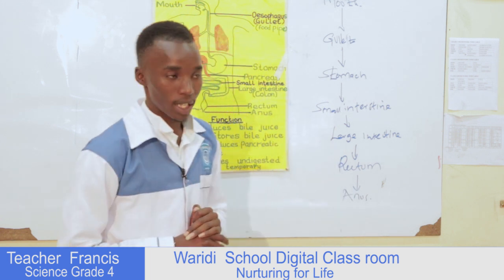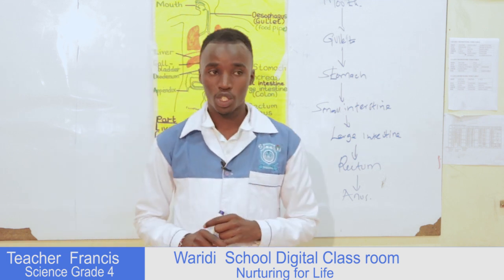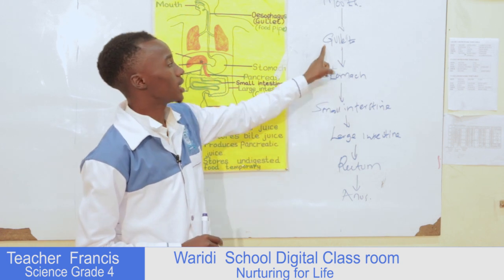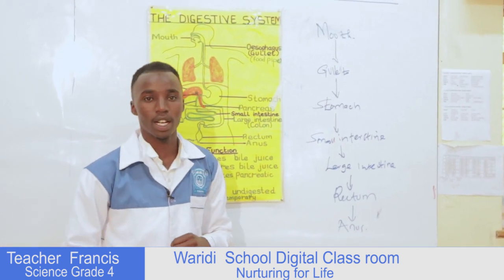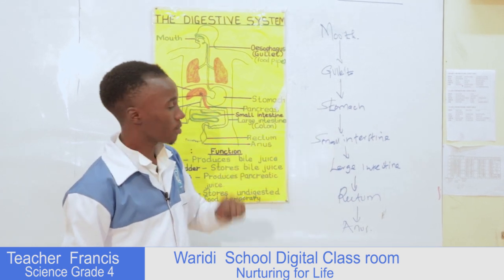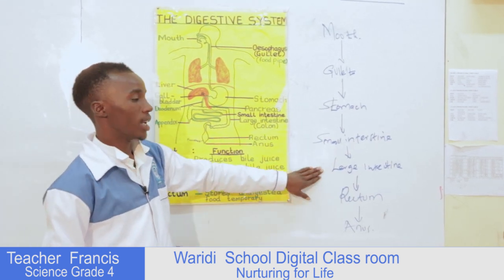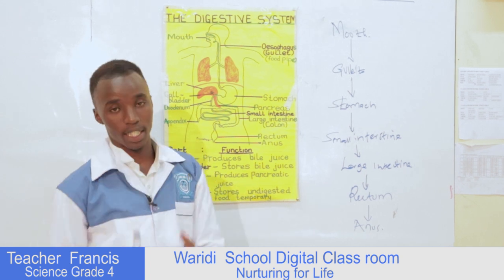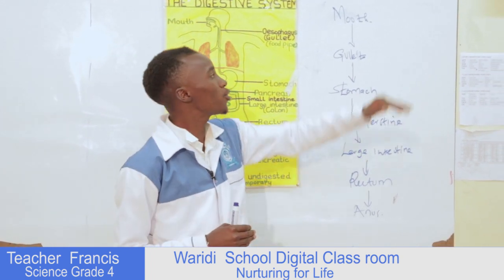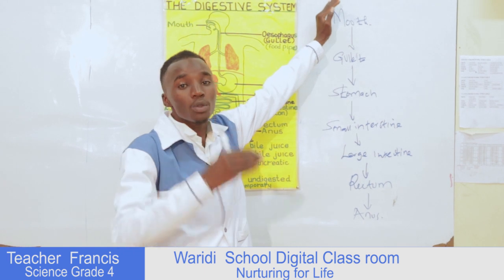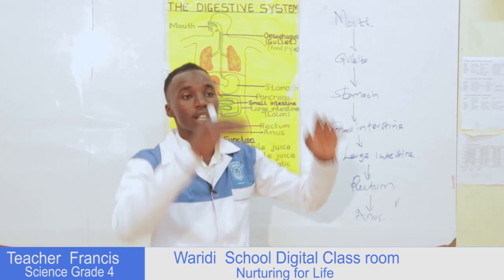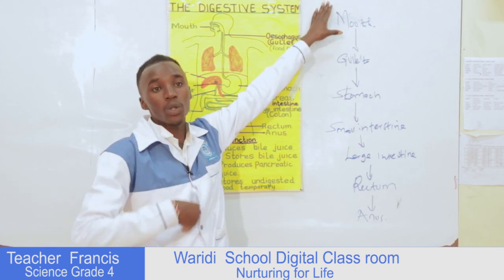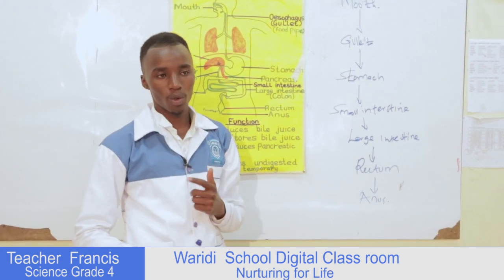So we're going to discuss about the alimentary canal. It consists of the following parts: the mouth, the gallet (another name is oesophagus), the stomach, the small intestine, the large intestine, rectum, and anus. This is a complete process that moves from the mouth all the way to the anus. We're going to discuss every part, its function, and where the food goes next, one by one.